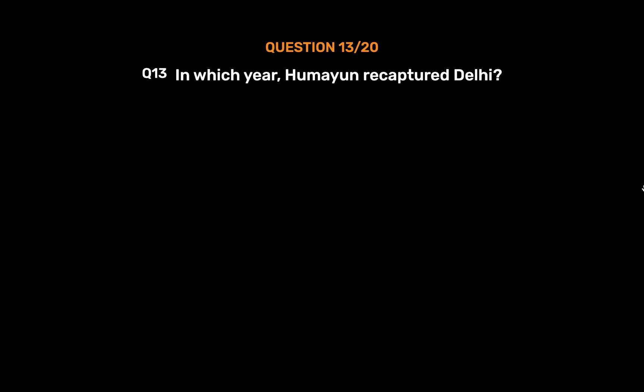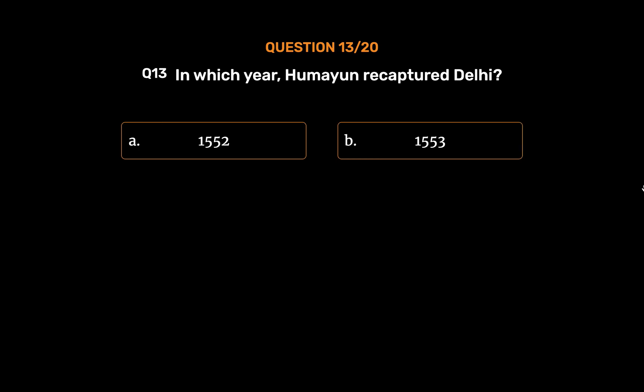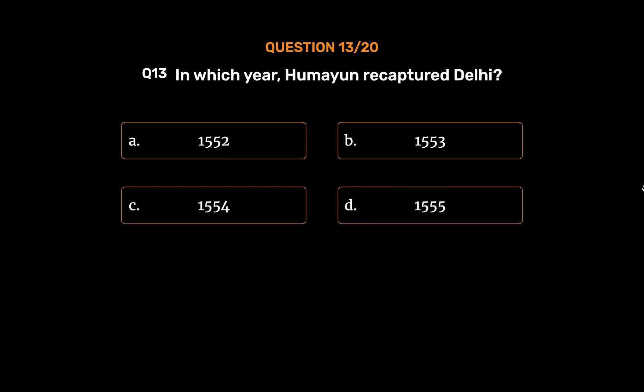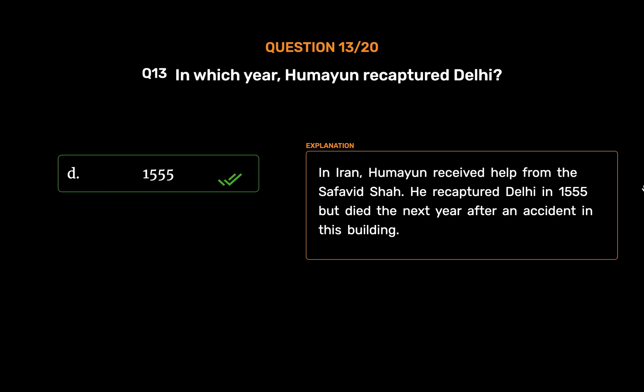Question 13: In which year did Humayun recapture Delhi? Option A: 1552. Option B: 1553. Option C: 1554. Option D: 1555. The correct answer is Option D, 1555. Humayun received help from the Safavid Shah. He recaptured Delhi in 1555 but died the next year after an accident in his building.